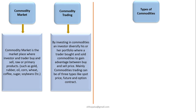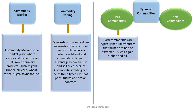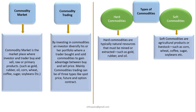Now, types of commodities. Mainly there are two types of commodities. First, hard commodities. Second, soft commodities. Hard commodities are typically natural resources that must be mined or extracted, such as gold, rubber, and oil. Soft commodities are agriculture products or livestock, such as corn, wheat, sugar, soybean, etc.